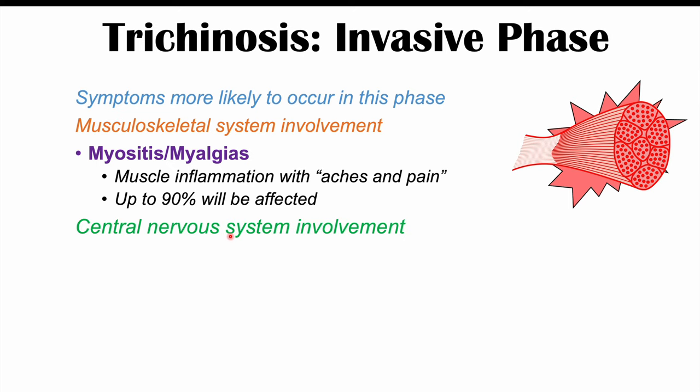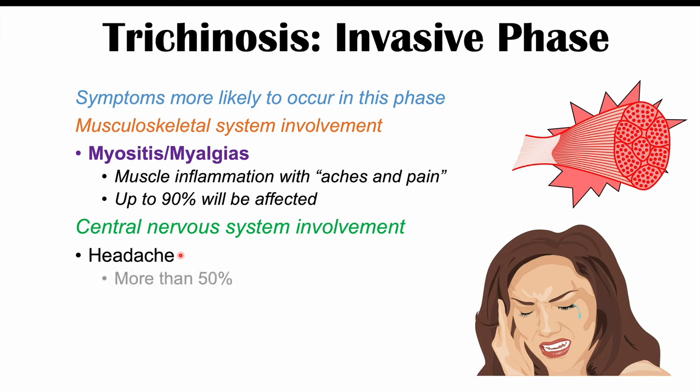In some cases, the central nervous system can become involved. With CNS involvement, we can see headache, which can occur in more than 50% of patients. Because of CNS involvement, there is a risk of mortality, so it is very important to recognize central nervous system involvement of trichinosis.